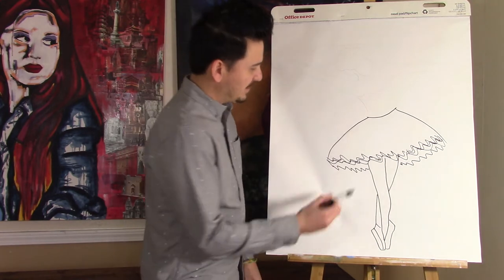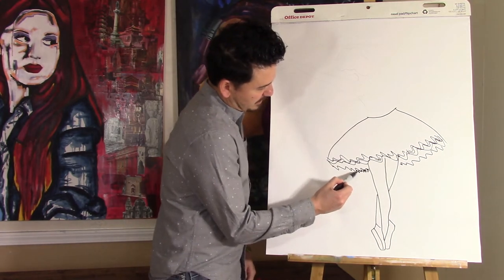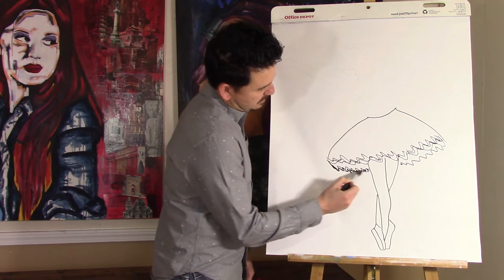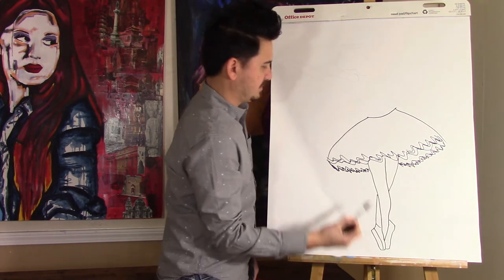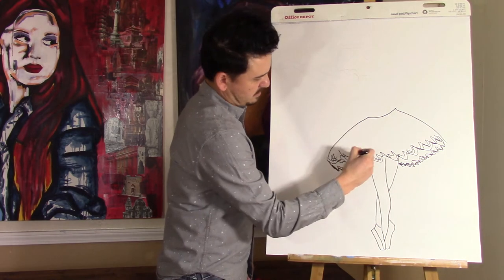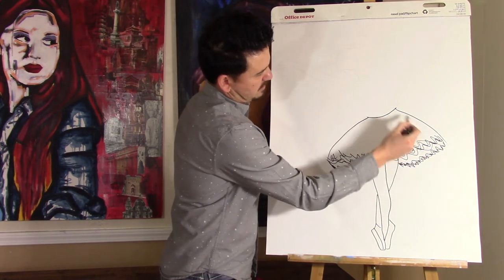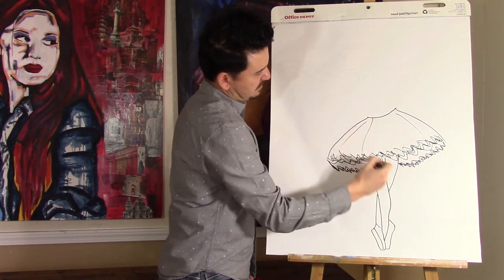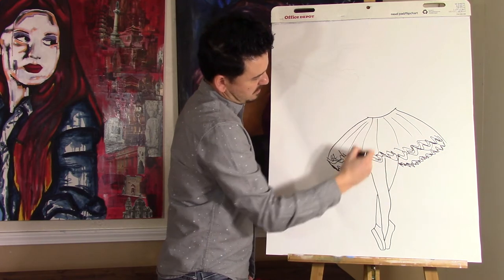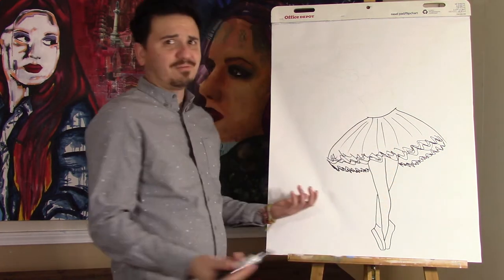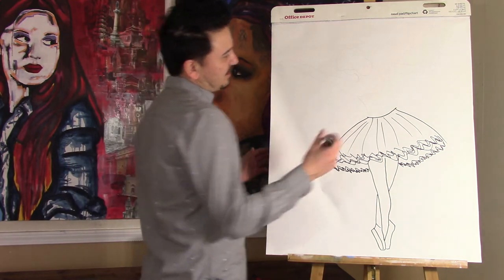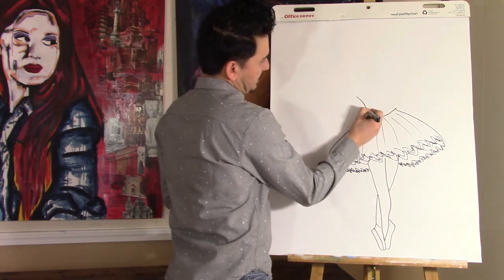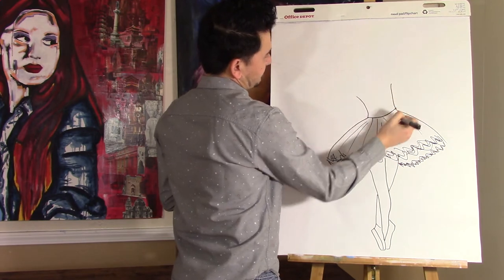If I'm going too fast, just slow me down by pausing me. We'll add some more squiggly lines, and this doesn't have to be perfect. Add some lines. And now we're halfway done. So now you go up — this will be her body, her torso.